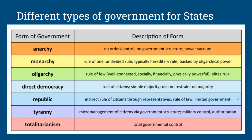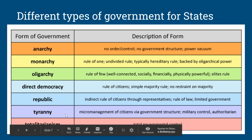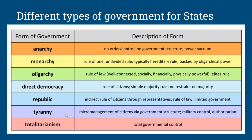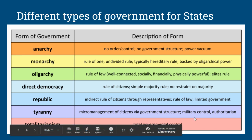Tyranny is when there is micromanagement of citizens through a government structure. Generally speaking, it is military-controlled society and authoritarian rule. Tyranny is not good — it turns into one person kind of terrorizing their citizens. Totalitarianism is when there is total government control; the citizens don't have a say, and this is generally when the military is taking over and enforcing things.